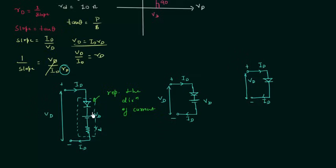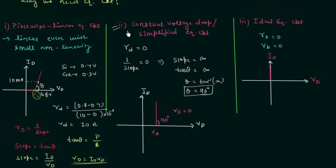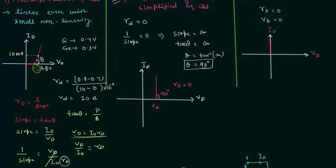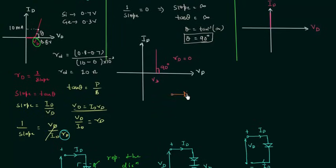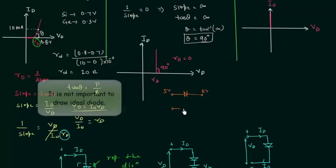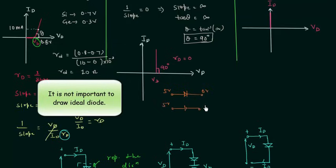Comparing the three models: in the piecewise linear model we have barrier potential Vb and diode resistance Rd. In the constant voltage drop model, Rd equals 0 so we only have the barrier potential. In the ideal model, both barrier potential and Rd are equal to 0. The constant voltage drop model is mostly used when you solve numerical problems. In a numerical problem, if the diode is forward biased — for example, 5 V on one side and 0 V on the other — you have to replace the diode with its barrier potential.